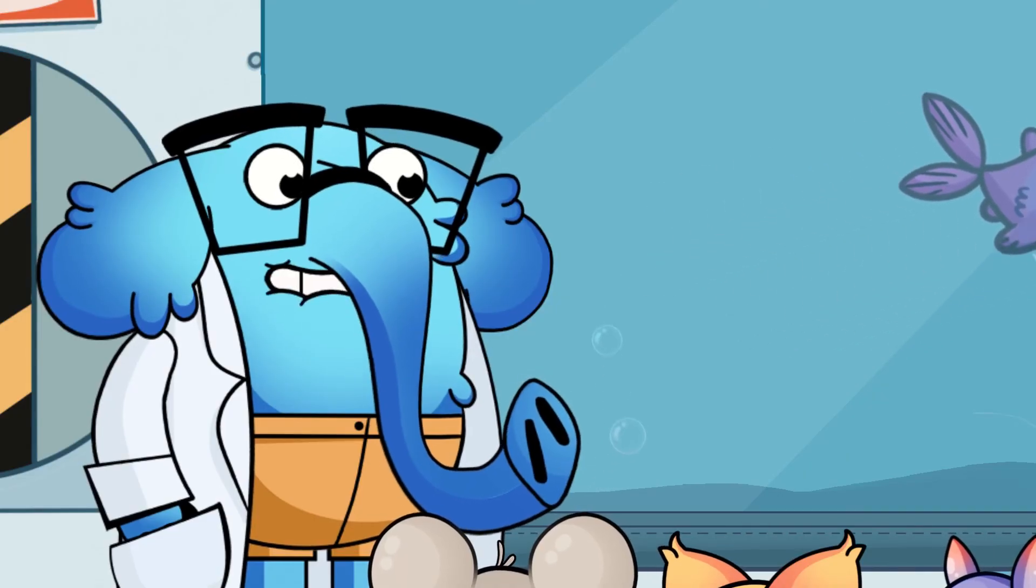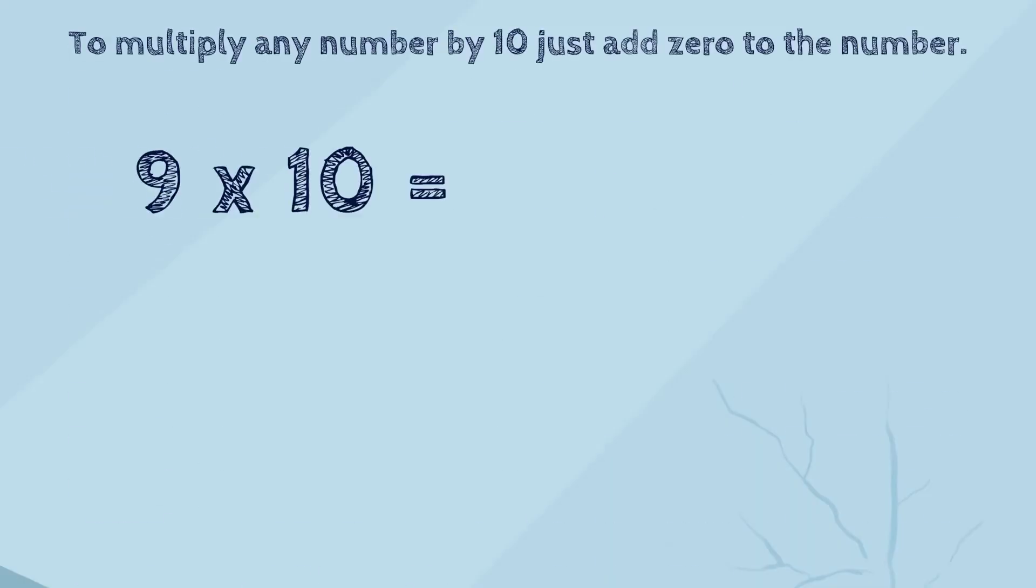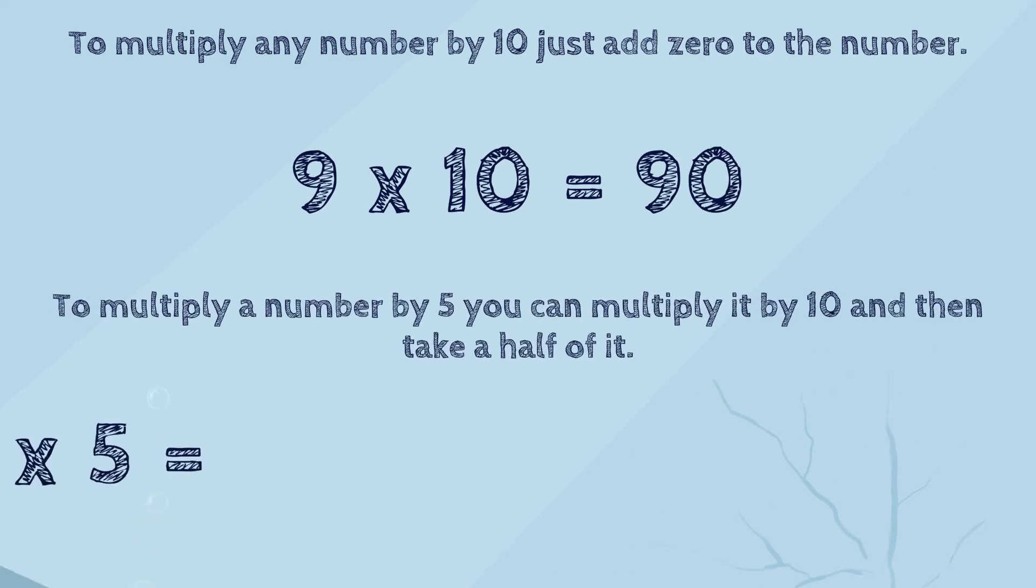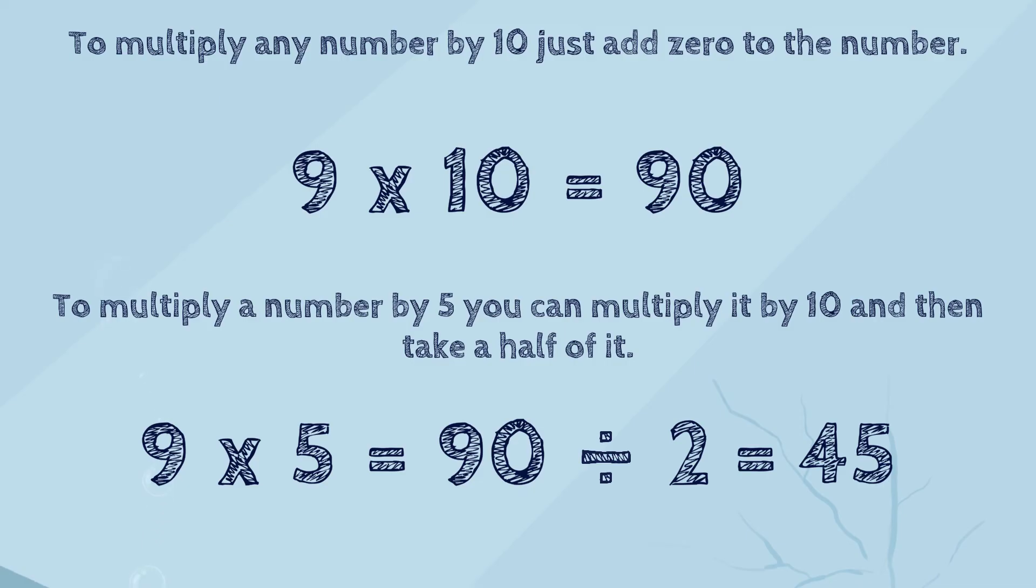Let's repeat the tricks we've learned. To multiply any number by 10, just add 0 to the number. To multiply a number by 5, you can multiply it by 10 and then take half of it.